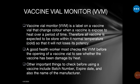The VVM is a label on a vaccine vial that changes color. It changes color when a vaccine is exposed to heat over a period of time. Therefore, all vaccines are expected to be stored within the normal temperature so that they will not lose their potency.